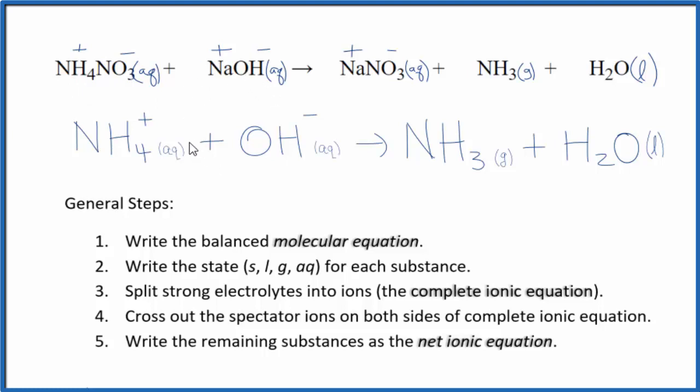You'll note that charge is conserved. We have a plus and a minus. They give us a net charge of zero here. These compounds are all neutral, net charge of zero as well. And if you count the atoms up, they're all balanced.